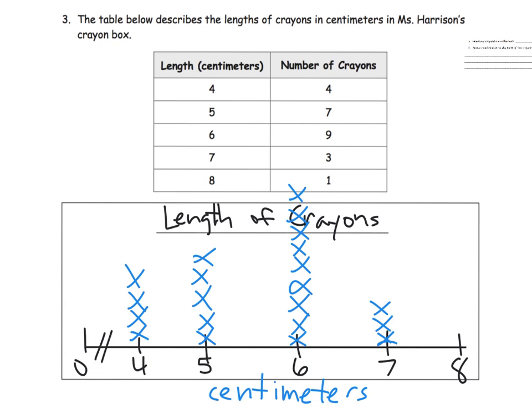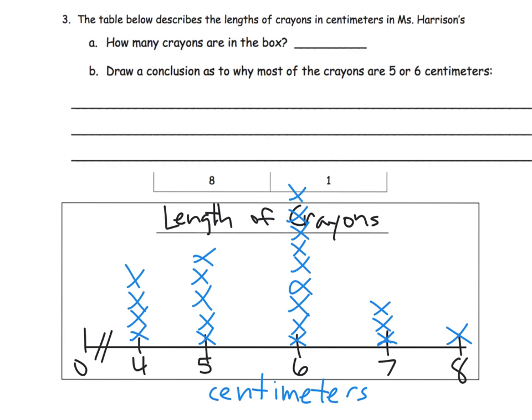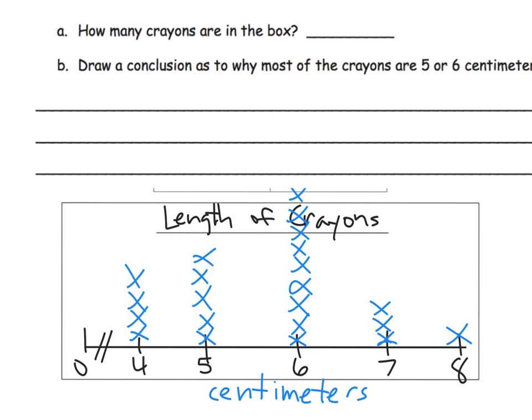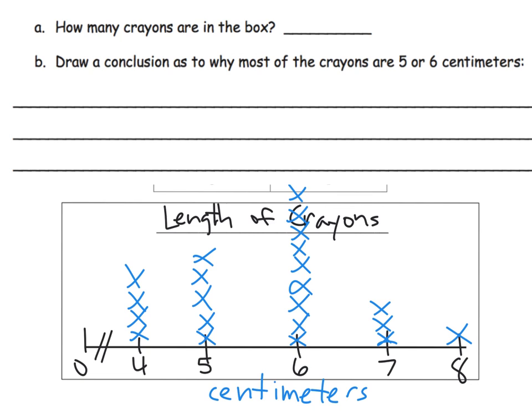There's our line plot. Once you have your line plot, you can start answering a ton of questions. For example, how many crayons are in the box, or draw some sort of conclusion as to why most of the crayons are five or six centimeters long, or why can we say that there's no crayons that are ten centimeters long, or what about one centimeter—why aren't there any crayons that are one centimeter?